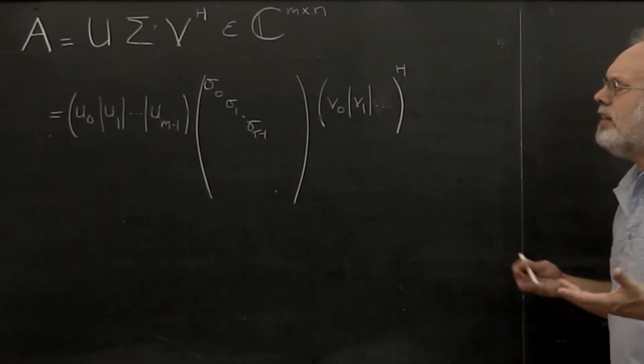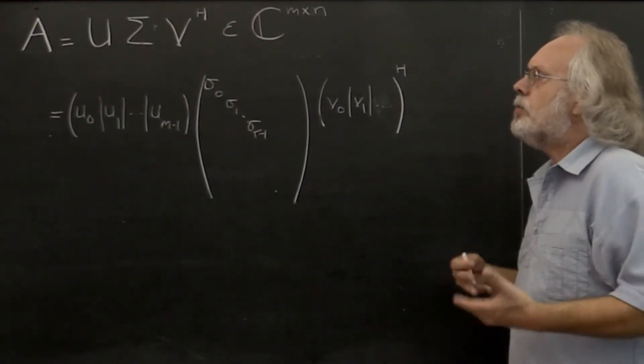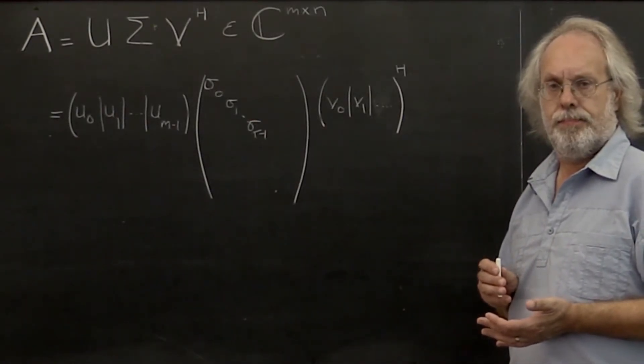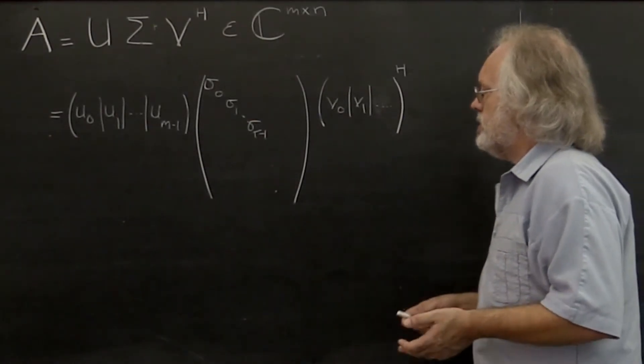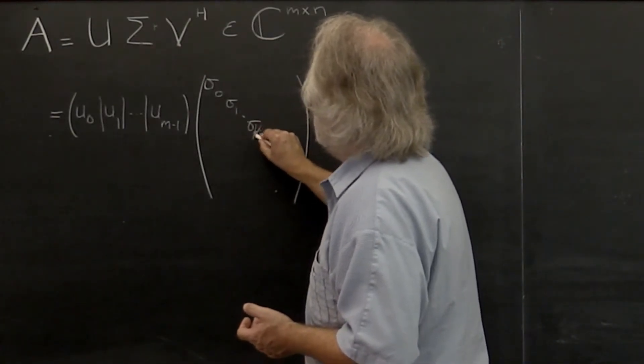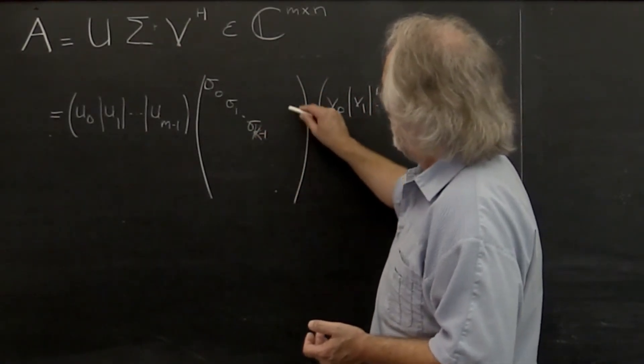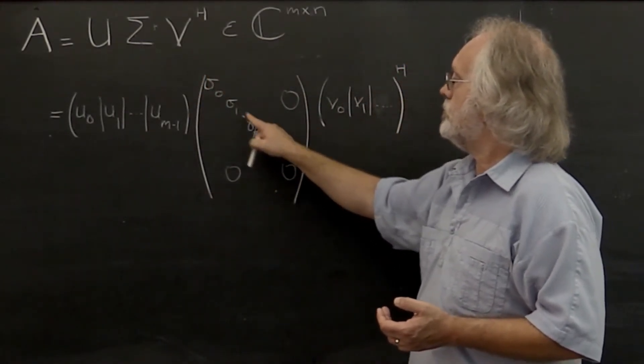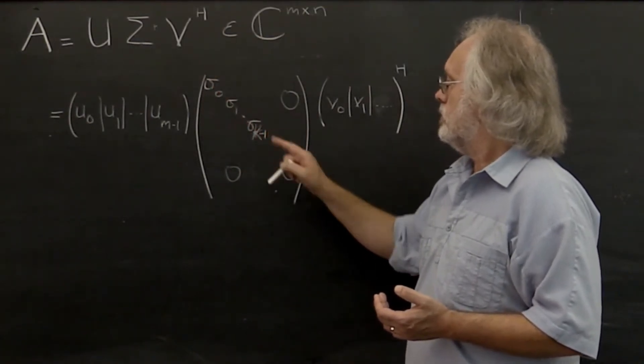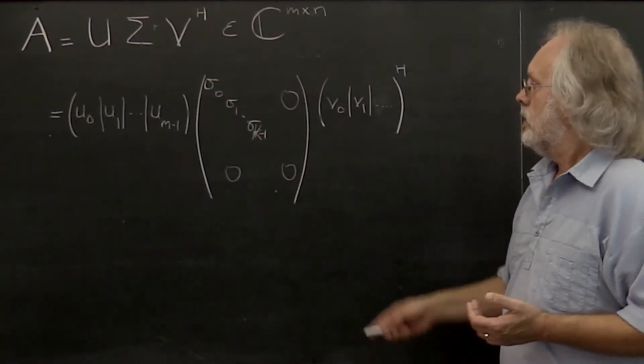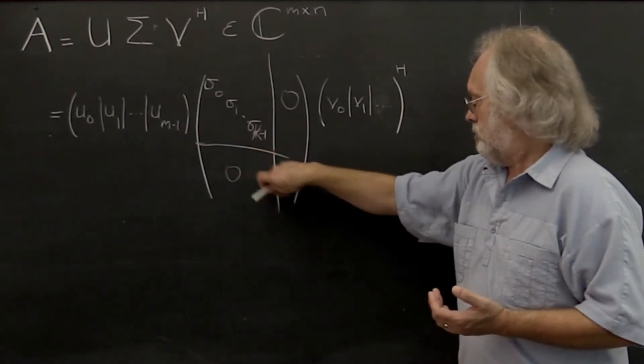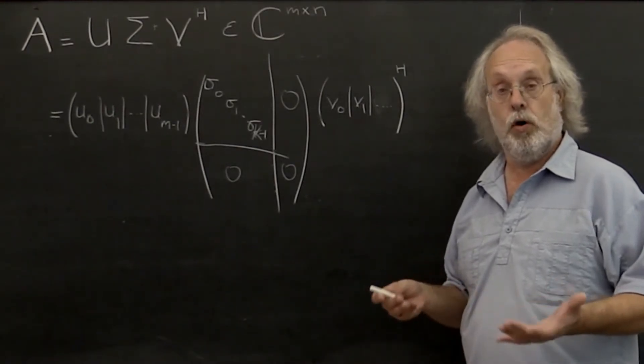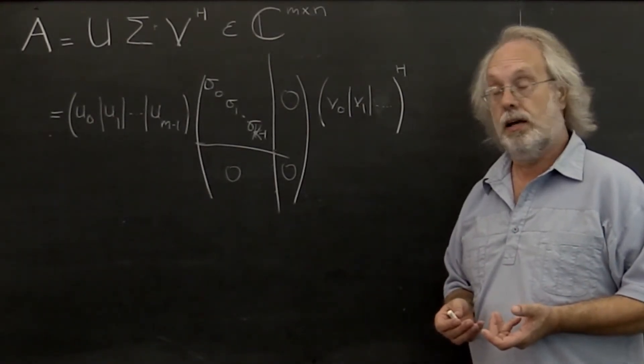How then can you detect what the actual rank of matrix A is? Well, it turns out that if you cut this off after k singular values and set the rest to zero—remembering that singular values are ordered from largest to smallest—if you set all of these to zero because you believe them to be small enough that they should be treated as zero,